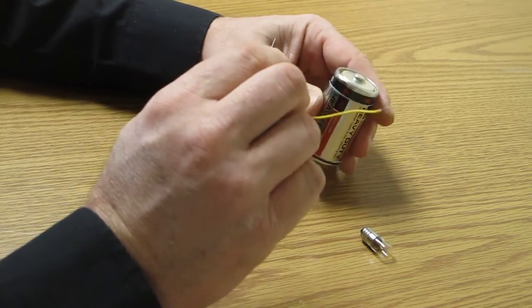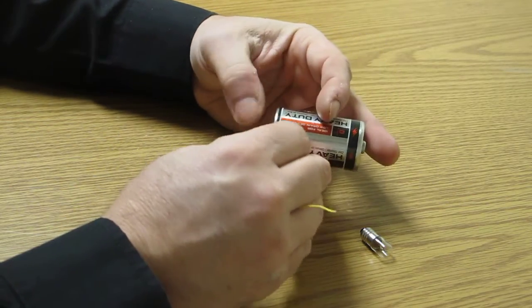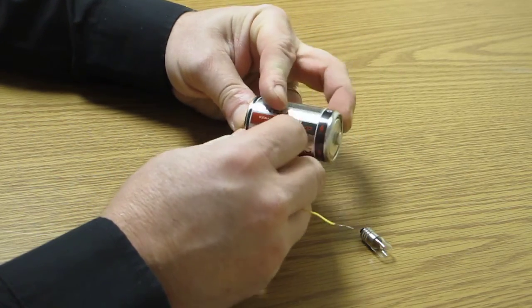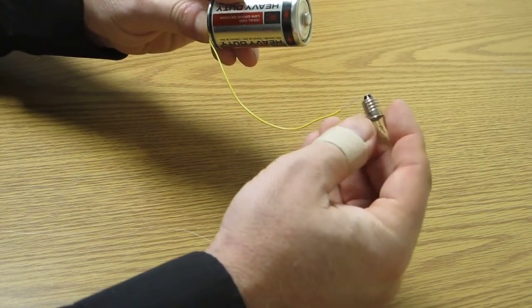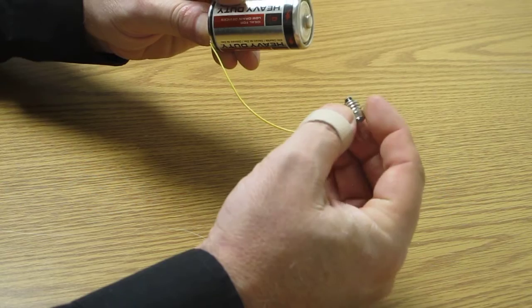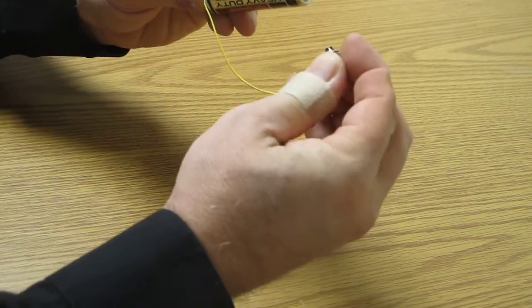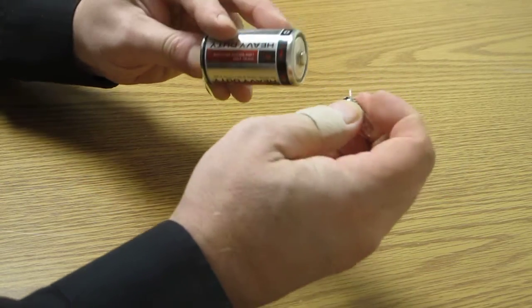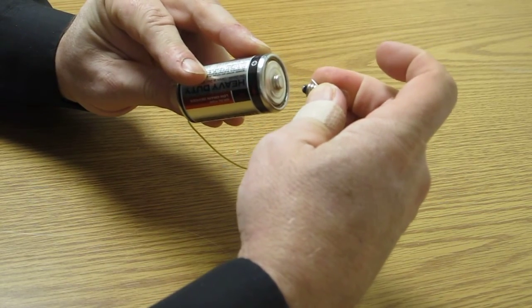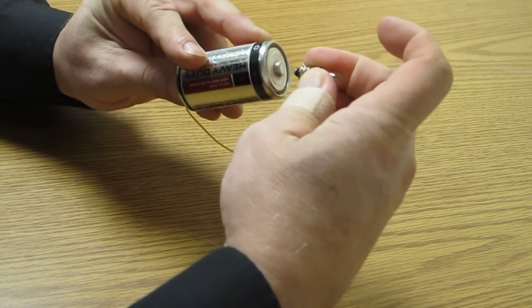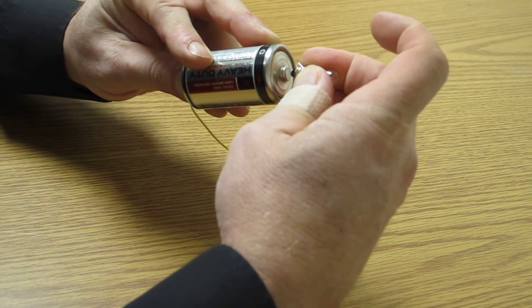Hold one end of the wire next to the bottom of the battery, the dry cell. Hold the other end so it is touching the metal part on the side of the bulb. Finally, touch the bottom of the bulb to the other end of the dry cell.